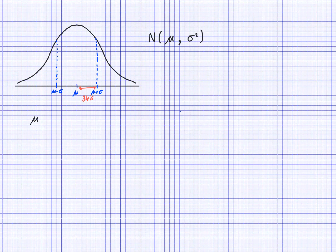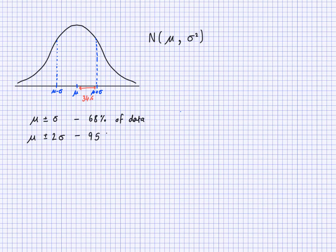So to write that down: mean plus or minus one standard deviation contains 68% of the data. The other rule we need to know is mean plus or minus two standard deviations, which contains approximately 95% of the data.